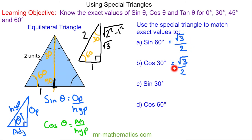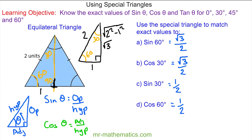We leave these solutions in the form √3/2 because any other form would not be exact. Now for sin 30° and cos 60°: the sine of 30° uses the opposite side which is 1, over the hypotenuse of 2, so sin 30° = 1/2. For the cosine of 60°, the adjacent is 1 and the hypotenuse is still 2, so cos 60° = 1/2.